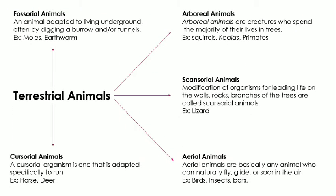Terrestrial animals are further classified into five types. The first is fossorial animals — those which dig holes and live inside tunnels — for example, moles and earthworms. Next are cursorial animals — those adapted for fast running — for example, horse and deer.